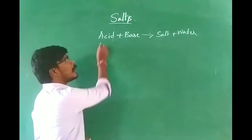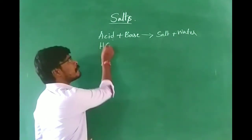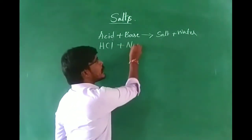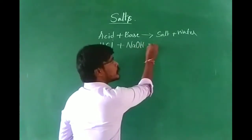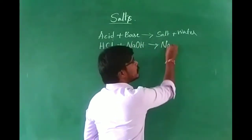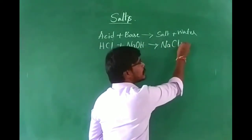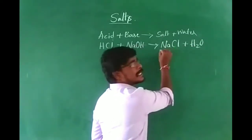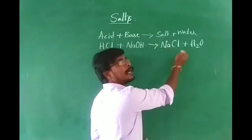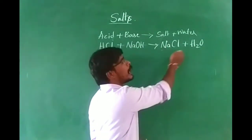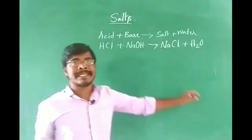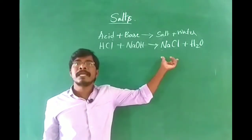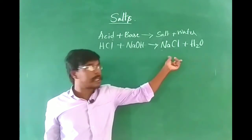A simple example: if you take acid as HCl and base as NaOH, it is going to form NaCl plus H₂O. So this NaCl we are calling it a salt — a common salt — and water H₂O as it is. This type of reaction we are calling a neutralization reaction.